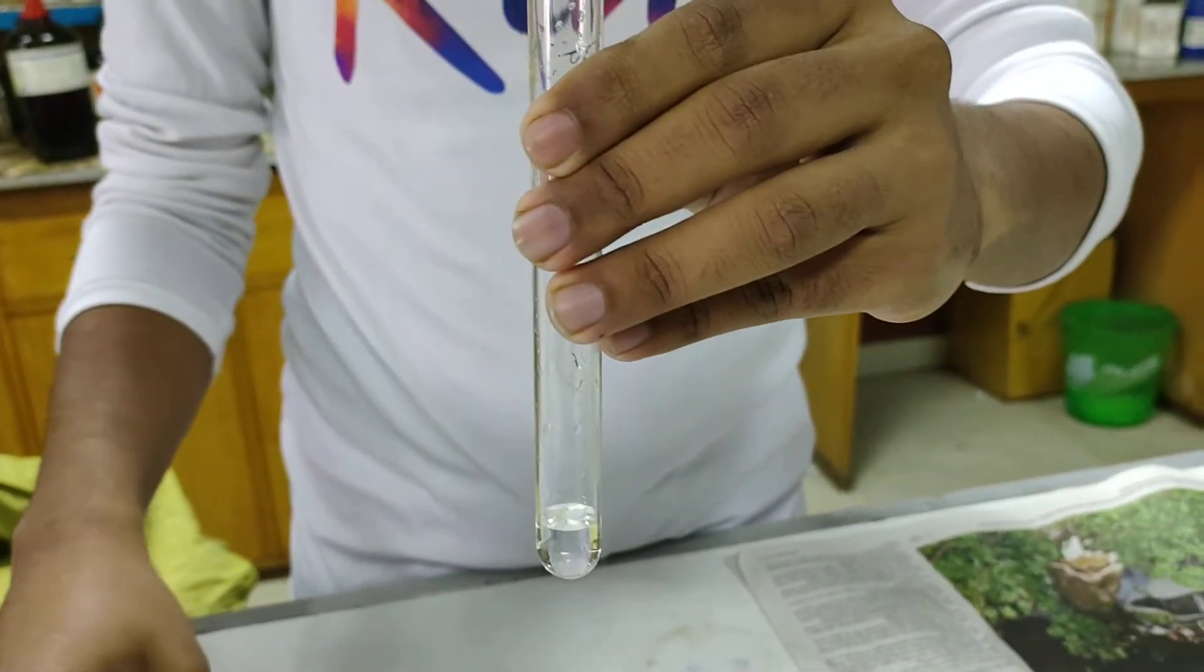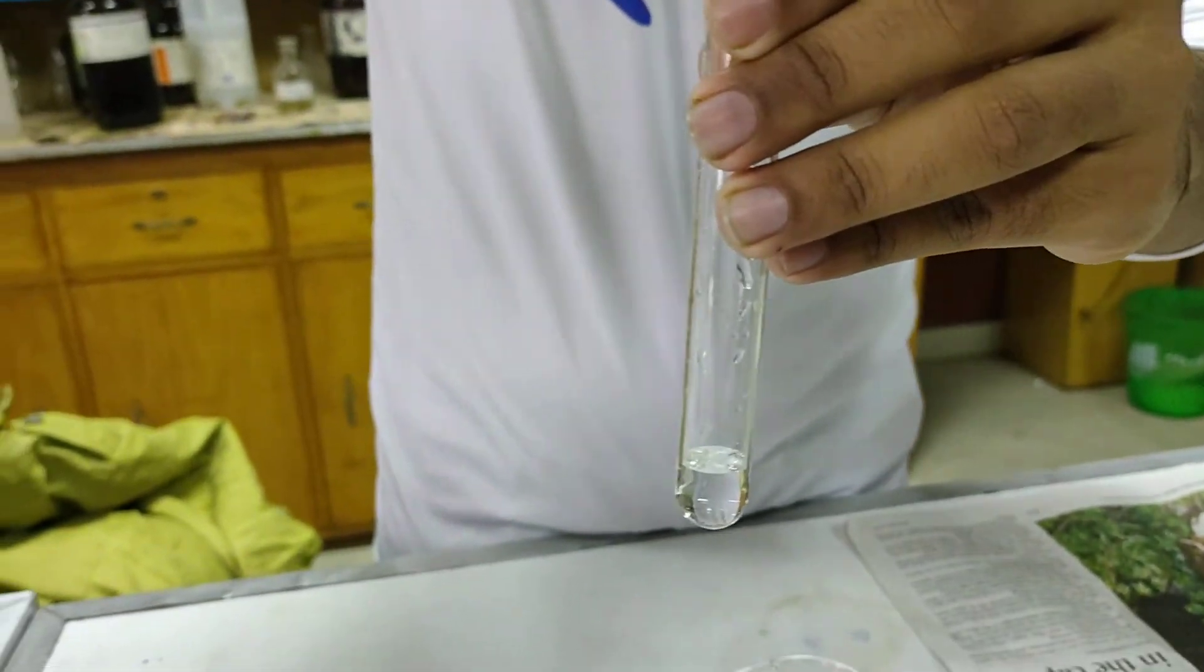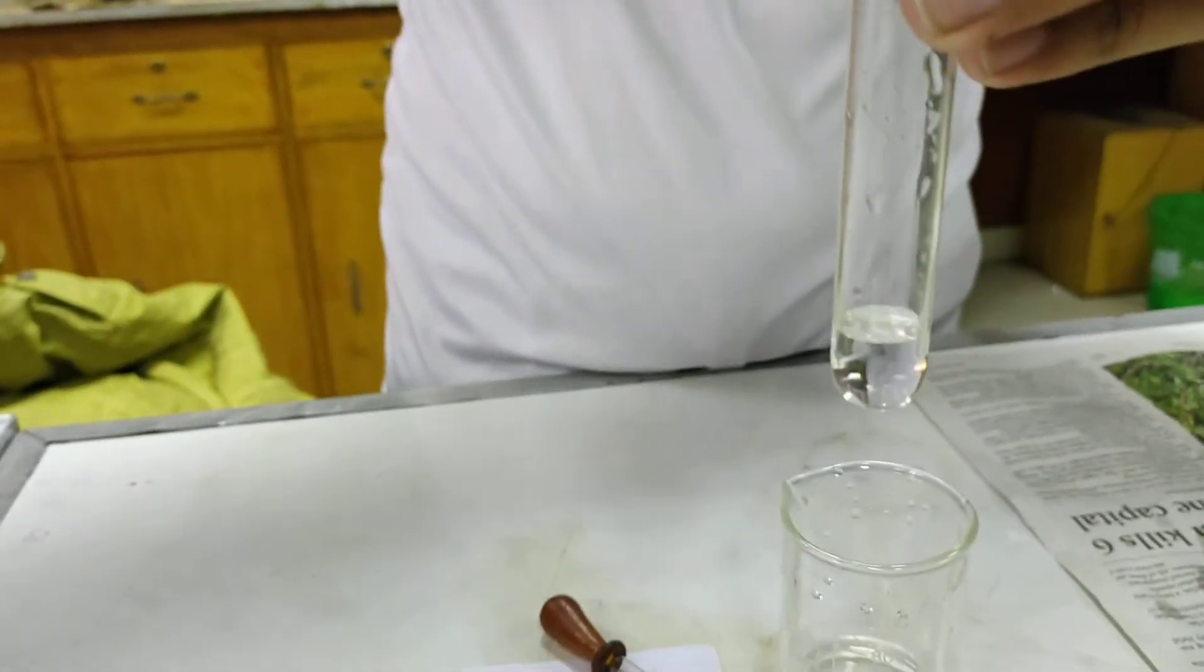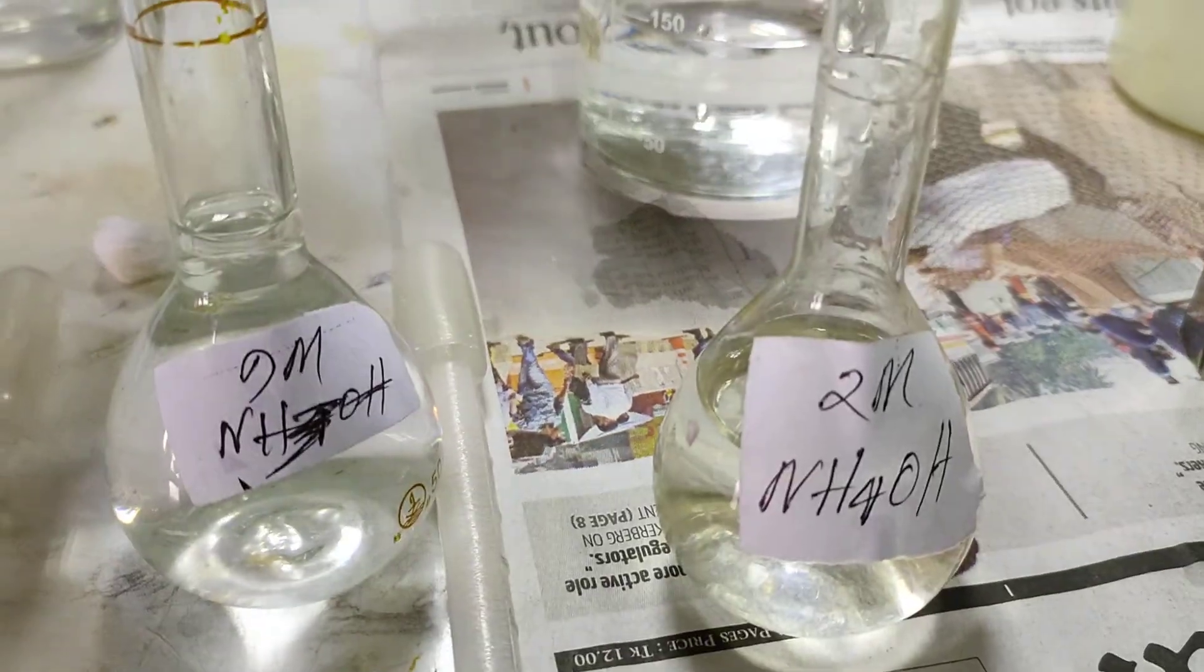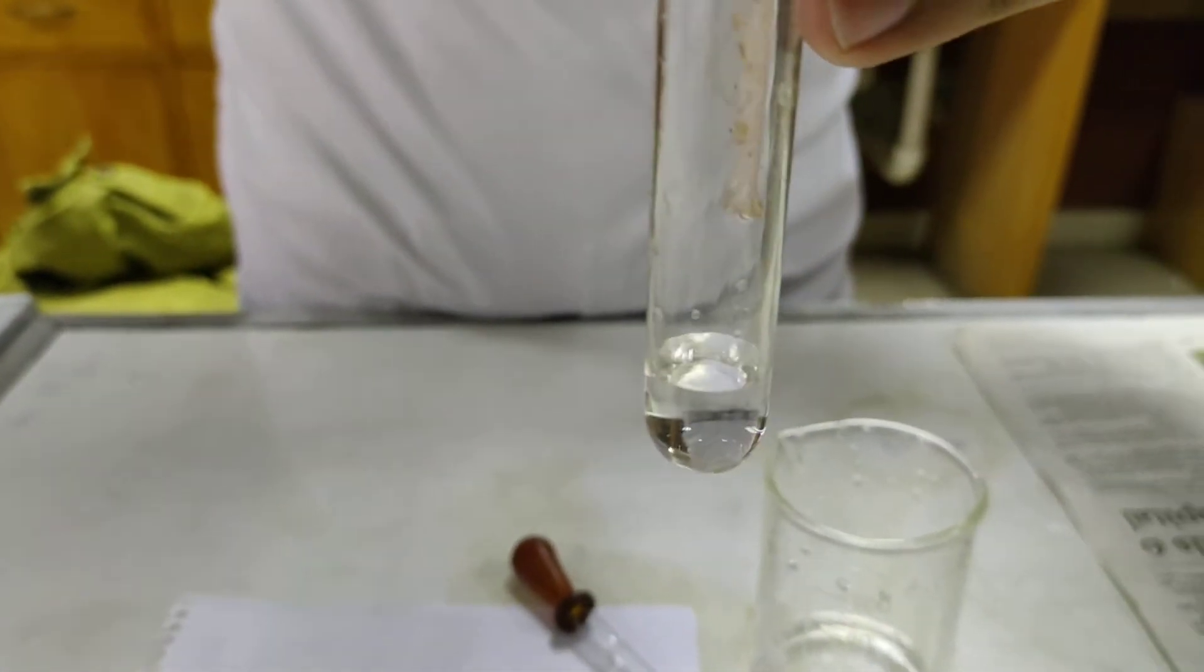Now, we are going to add dilute ammonia in this solution. This will produce white PPT. We are going to add this dilute 2M ammonium hydroxide into this solution, which will produce white PPT.